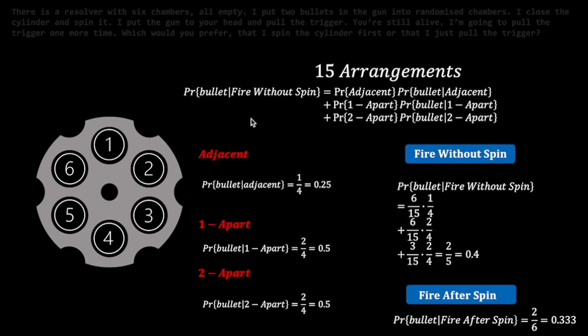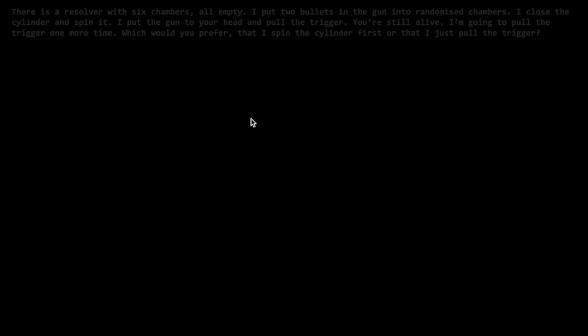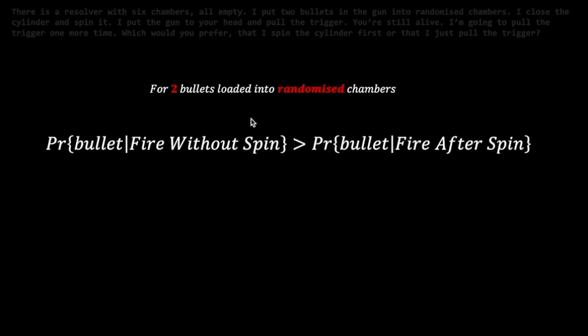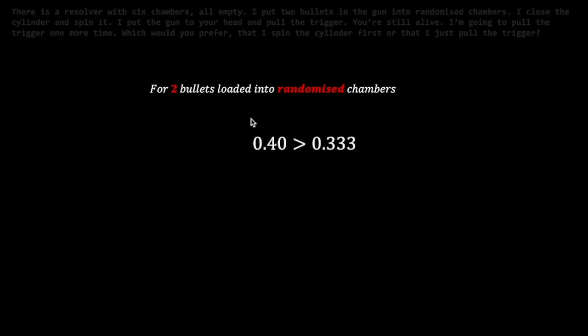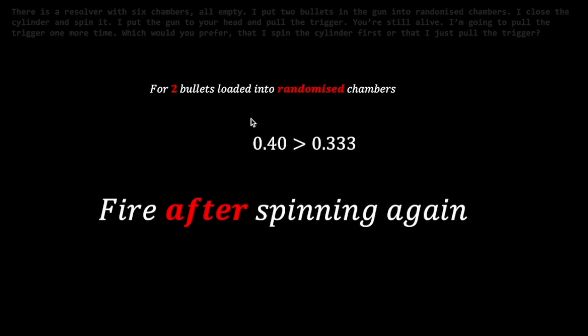For the same probability with a re-spin, this is simply two bullets out of six chambers, or 0.333, as we are simply resetting the probability of encountering a bullet. Since the former has a higher probability than the latter case, the candidate should fire after a re-spin.